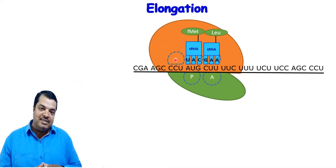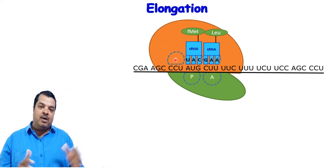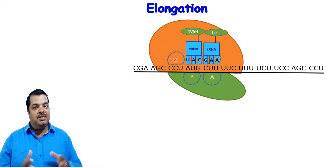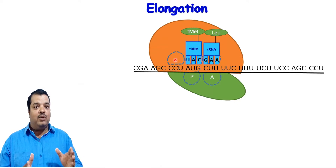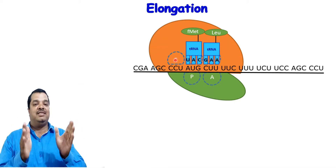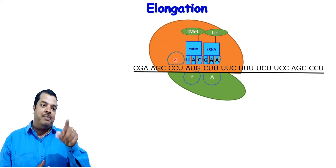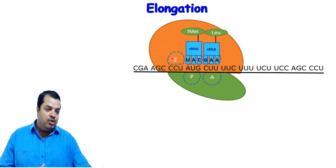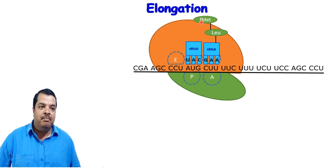Ribozyme is an enzyme that is not a protein — it is an RNA molecule. All enzymes are proteins except ribozyme. Ribozyme is an RNA molecule: ribosomal RNA, specifically 23S rRNA. So ribozyme facilitates peptide bond formation between the two amino acids.